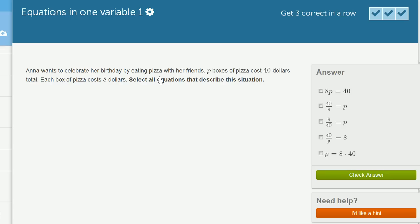Anna wants to celebrate her birthday by eating pizza with her friends. P boxes of pizza cost $40 total. Each box of pizza costs $8. Select all equations that describe this situation.